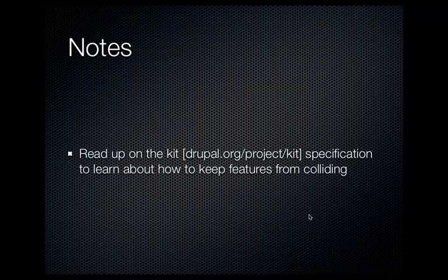Another thing to note: if you're going to be using features, I recommend reading up on the kit specification, written by developer Jeff Miklas. It's basically a specification on how you should name things to avoid collisions in features. If you have a site with lots of features and you're naming things with short titles, you can run into naming collisions. Read up on the specification for namespacing best practices to make sure things don't bump into each other.